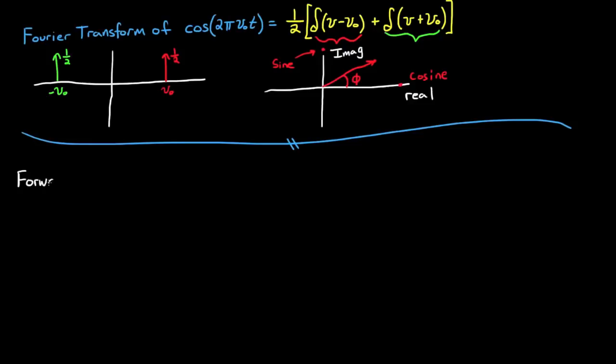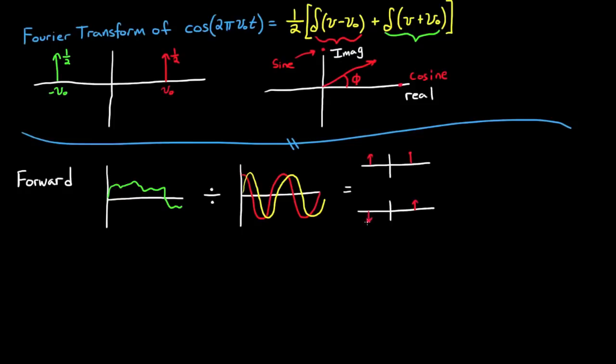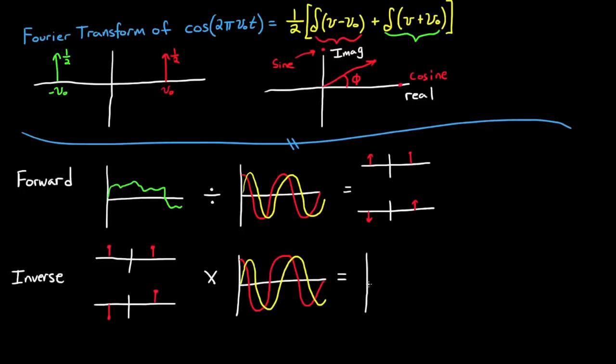And so this is how I tend to think of what the Fourier transform is doing. In the forward direction, it's just taking a time domain signal, then it's dividing it by a bunch of sines and cosines, and then adding up how much stuff is left across all time. In the inverse direction, it's taking the scaled amplitudes and phases, and then multiplying them by a bunch of sines and cosines to get back to the time domain. And that's really all they're doing. All variations of these equations are performing these exact same simple steps.